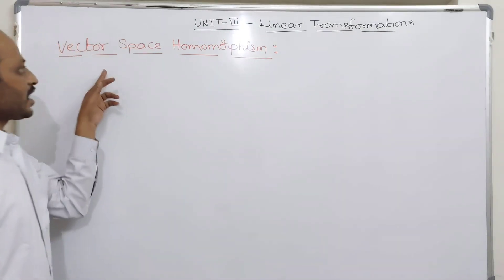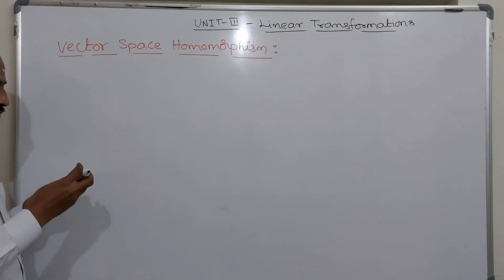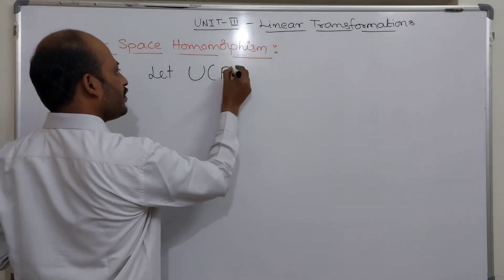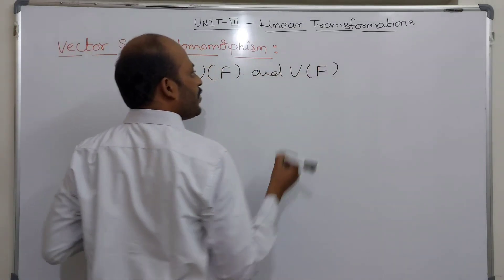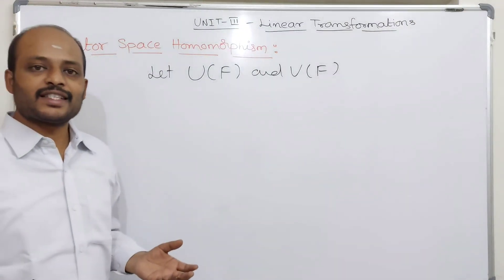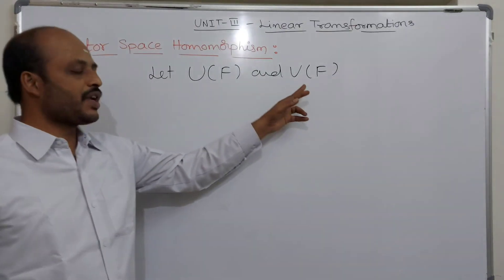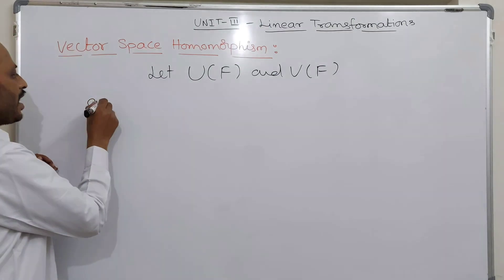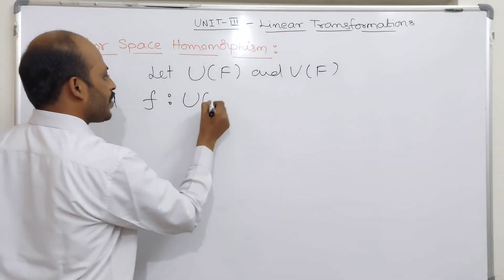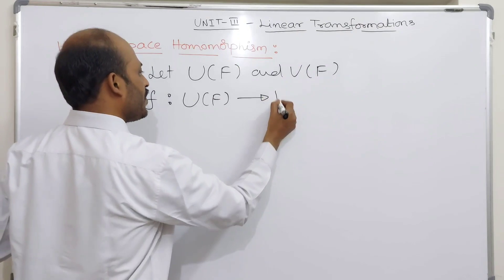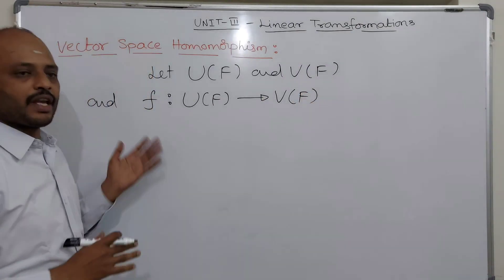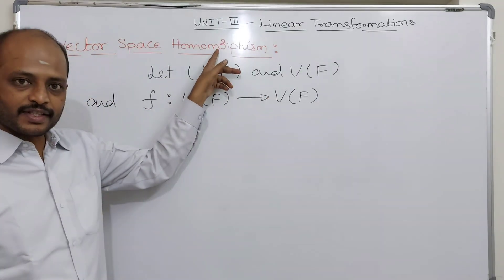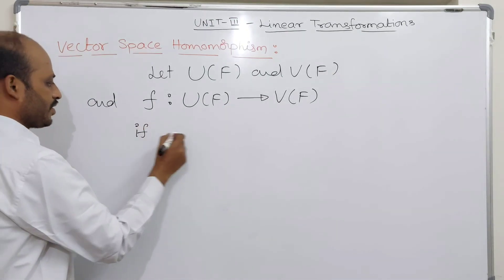Let us see the definition of Vector Space Homomorphism. Let U(F) and V(F) be any two vector spaces defined over the same field F. And let F be a mapping from U(F) into V(F). Then this F is said to be a homomorphism if it satisfies two conditions.